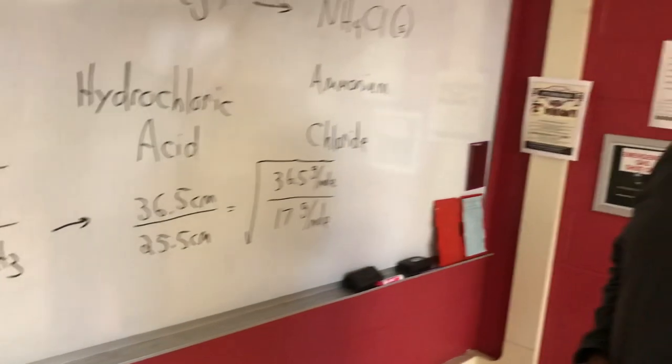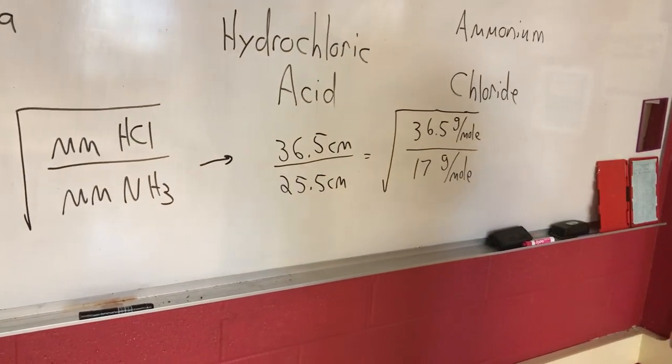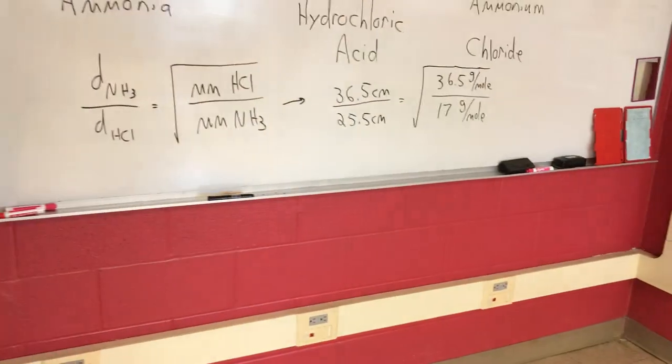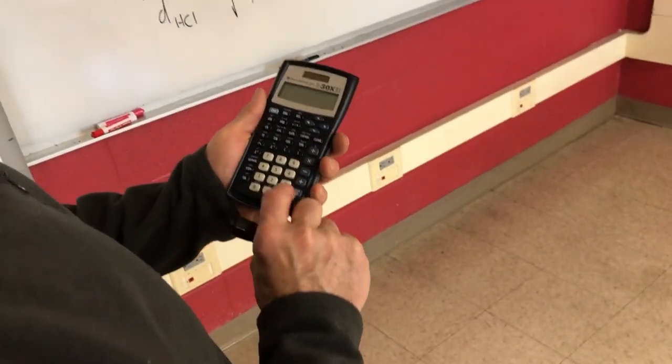Is that a coincidence that both numerators are 36.5? That is kind of funny. Okay. So, in theory, these would be a perfect match. Okay. I don't know if they are, but let's see.